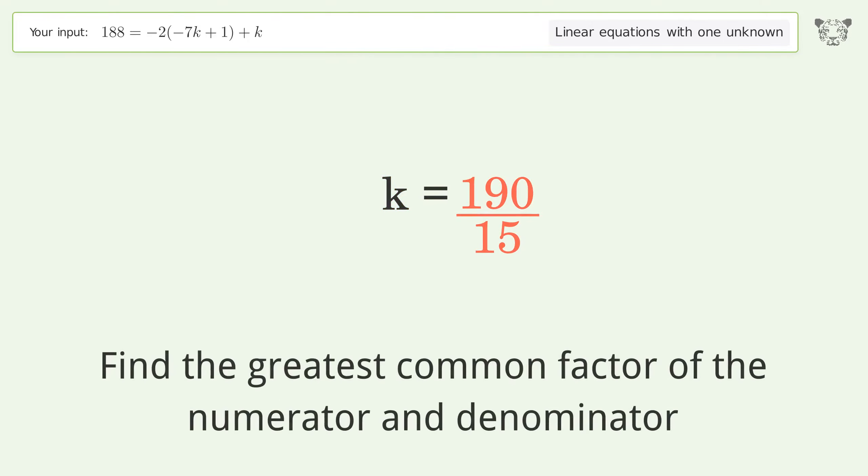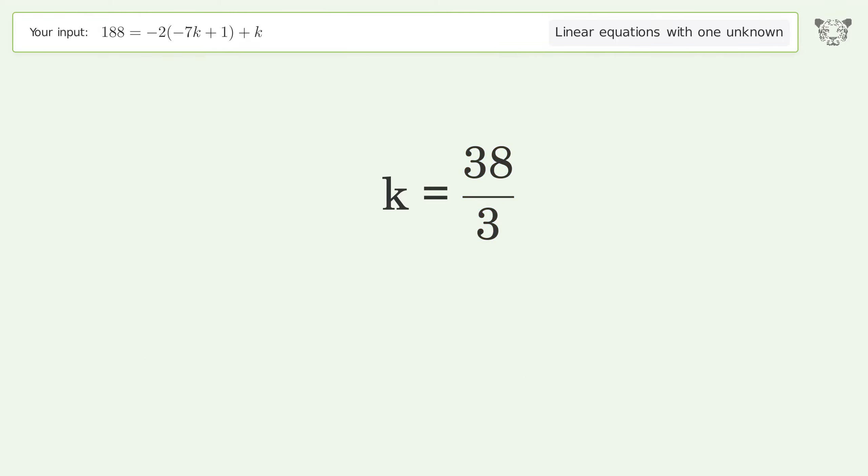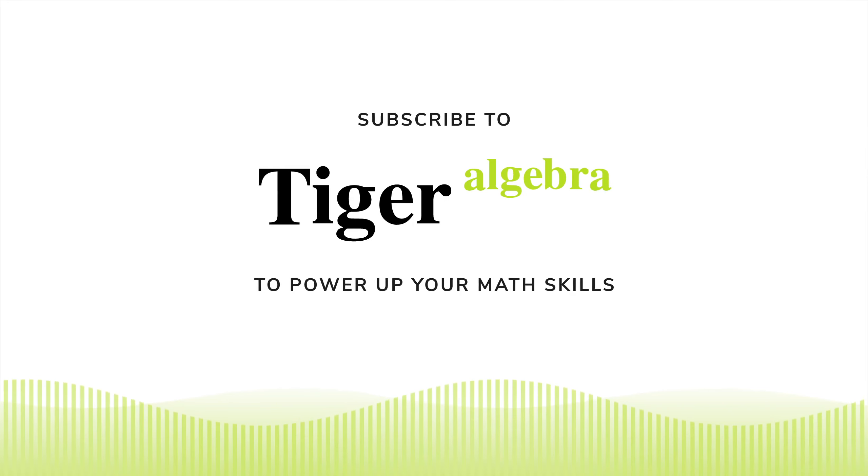Find the greatest common factor of the numerator and denominator. Factor out and cancel the greatest common factor. And so the final result is k equals 38 over 3.